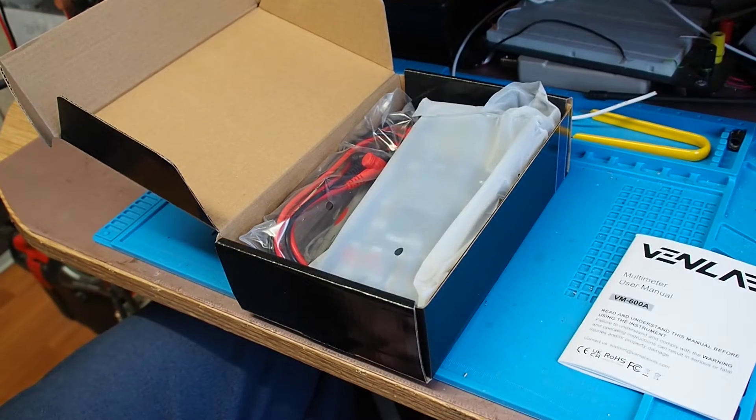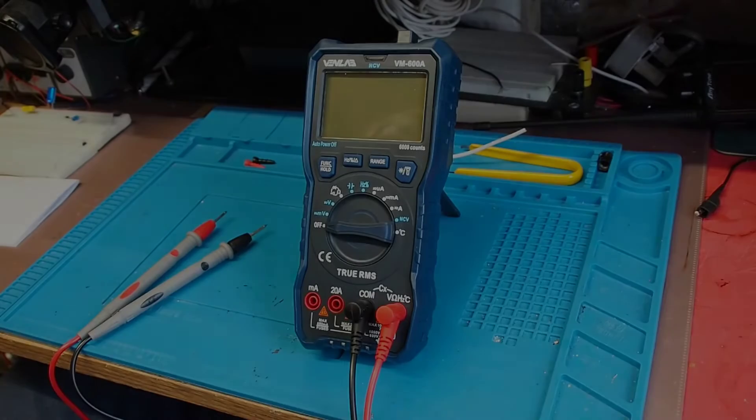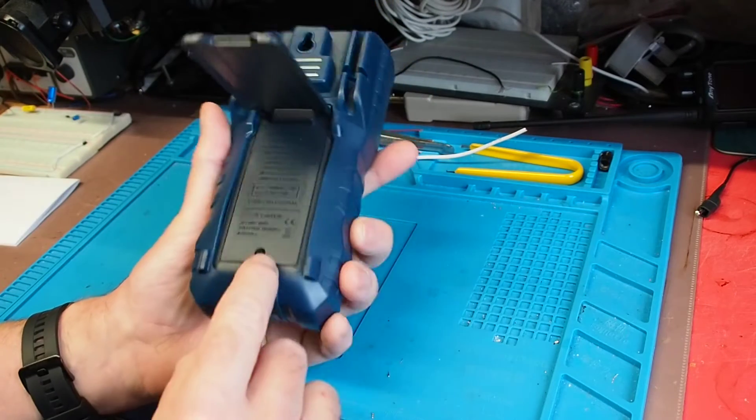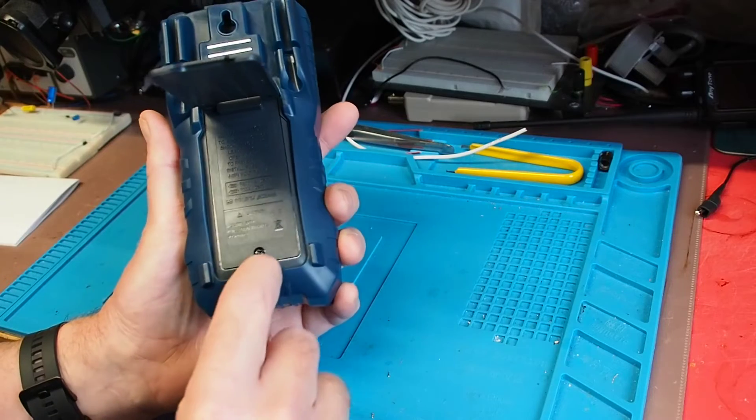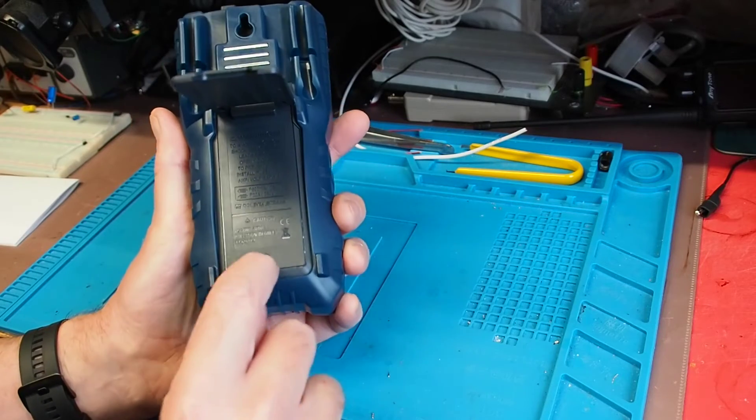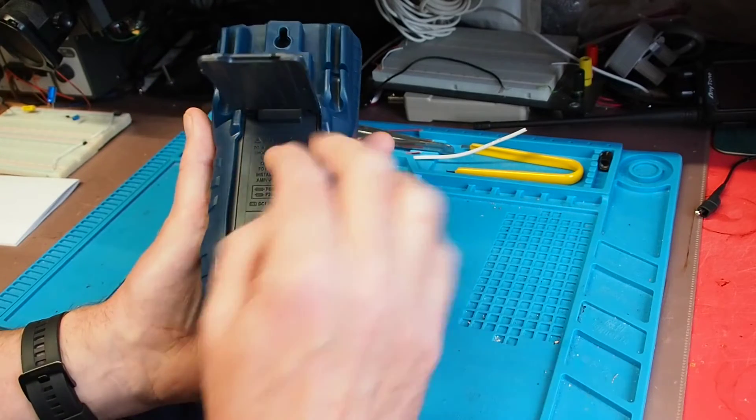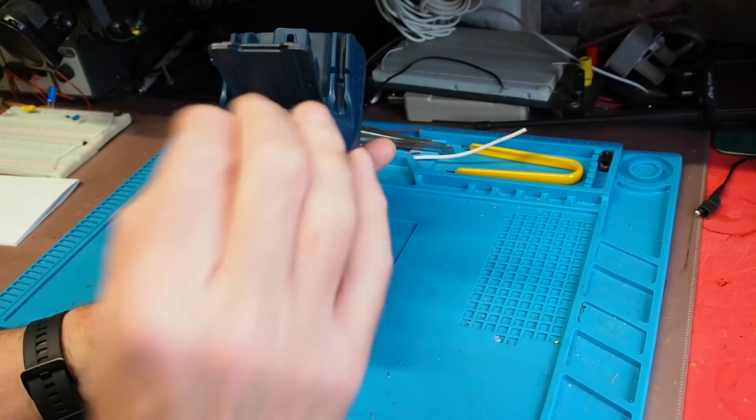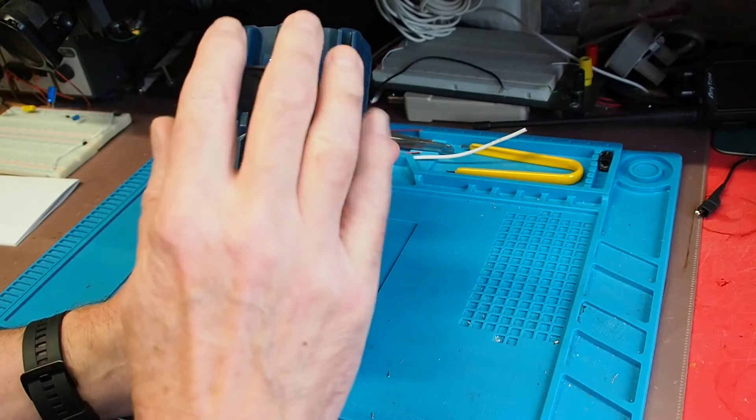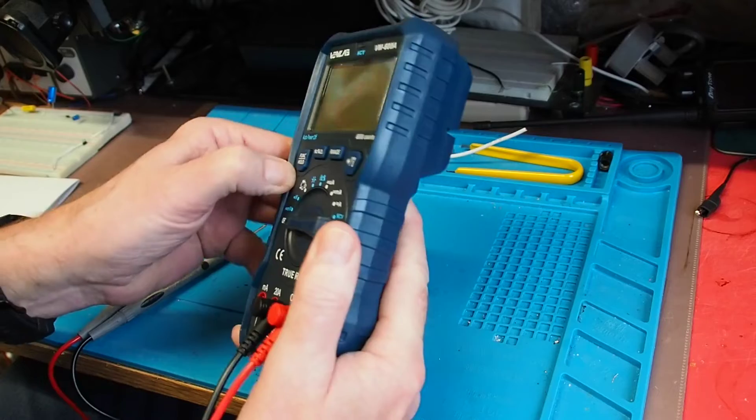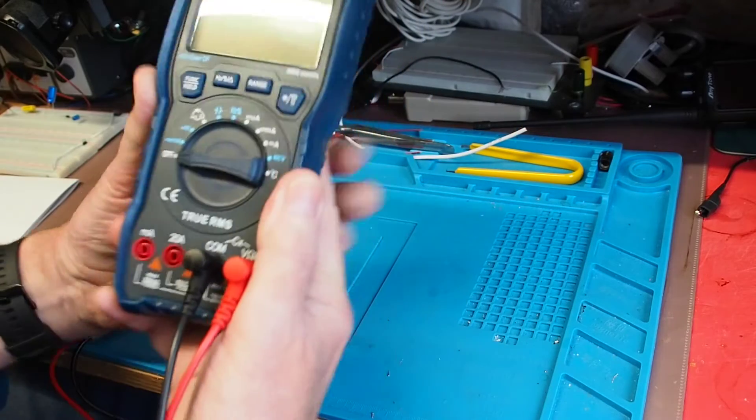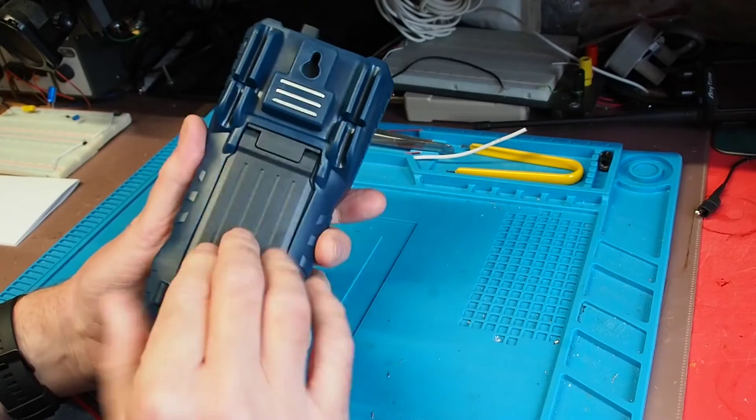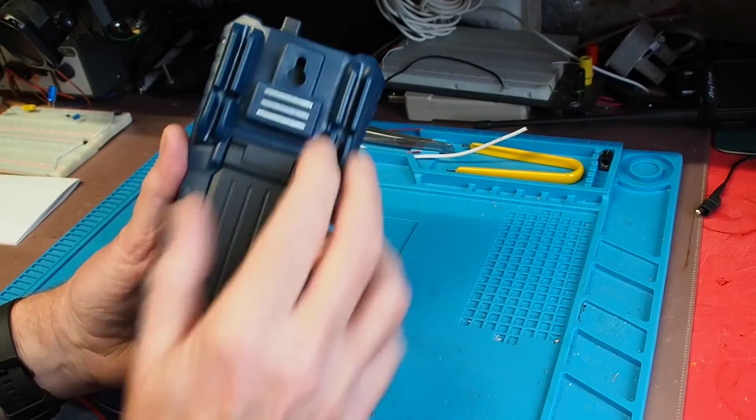Here's the meter with batteries installed. Something I like straight away is that when you insert the batteries, you undo that Phillips head screw there and this cover comes away along with the stand and allows you to access the battery case without having to fight to get the protective boot off the outside.